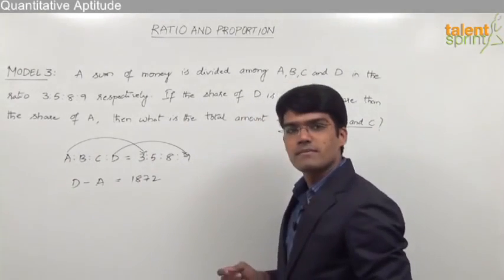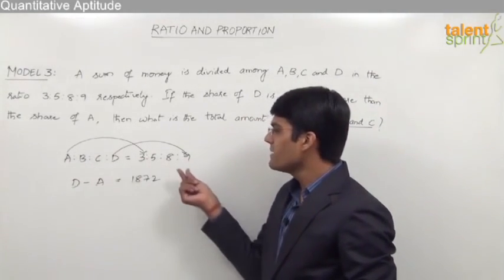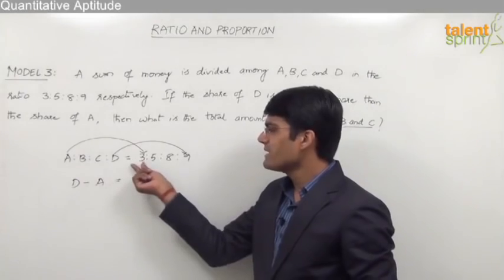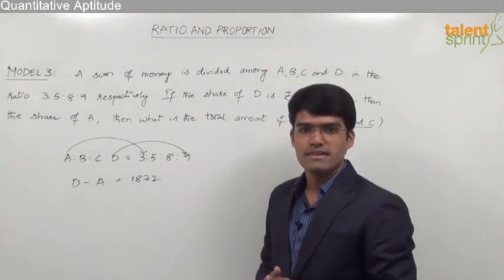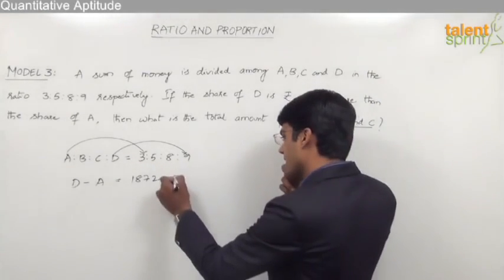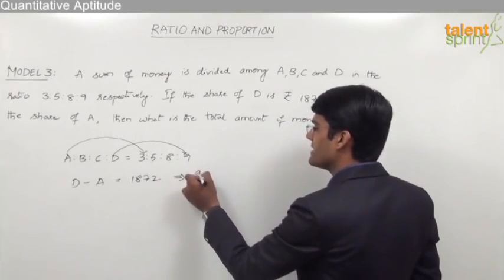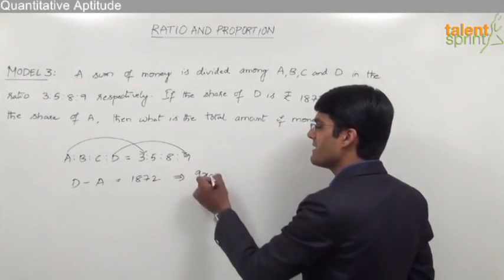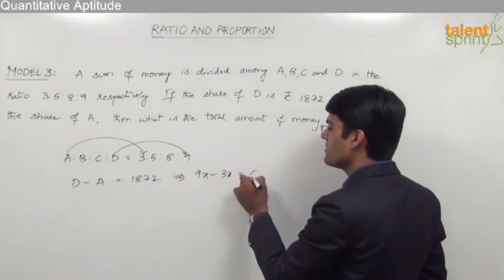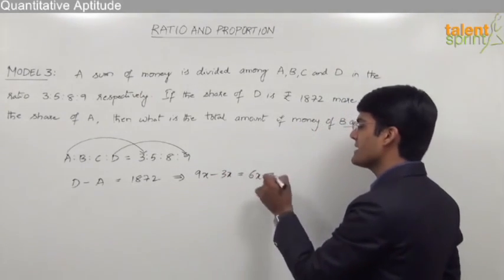Now if you look at the ratio here, we know that D has got 9 parts whereas A has got only 3 parts. So the difference of D and A can be taken as 9 parts minus 3 parts, which is equal to 6 parts. So we can say that 9x minus 3x should be equal to 6x, which is given as 1872.